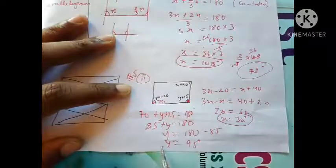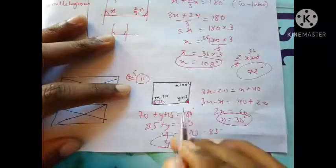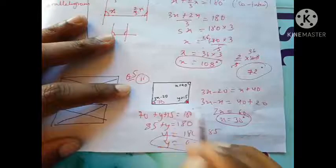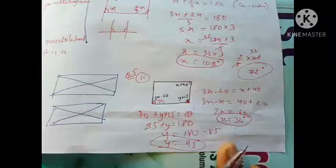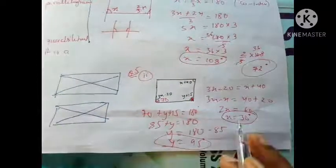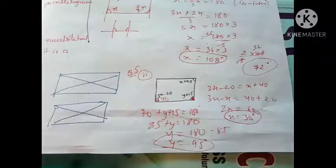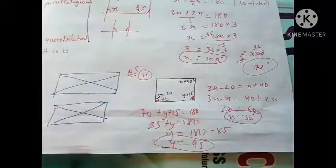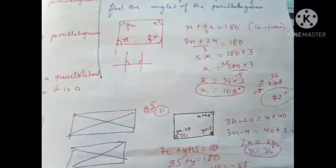So y = 95°. I got the value of x = 30° and y = 95°, and that was the goal. You won't have hard questions in this part. I hope you got something out of this video and will be able to do your homework. Thank you for watching, have a good day everyone, take care of yourself.